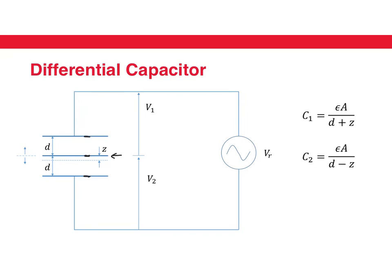Now, if you have a displacement of the center plate, the capacitance of one of the plates is going to increase while the other is going to decrease.